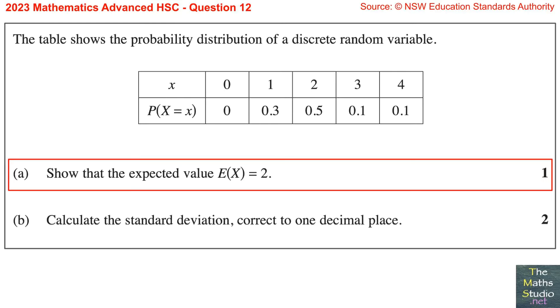Question 12. The table shows the probability distribution of a discrete random variable. Part A: Show that the expected value E of x equals 2.